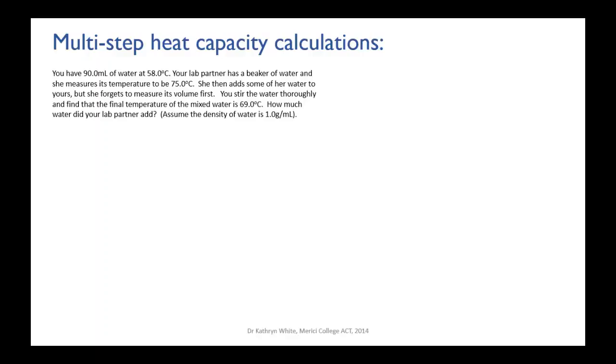She doesn't measure its volume or its mass. You stir the mixed water thoroughly and you find that the final temperature of that mixed water is 69.0 degrees Celsius. So the question is how much water did your lab partner add? And to solve this we're going to assume that the density of water is one gram per mil, so for every mil of water it's one gram of water. The way to approach it is to write down what you know.